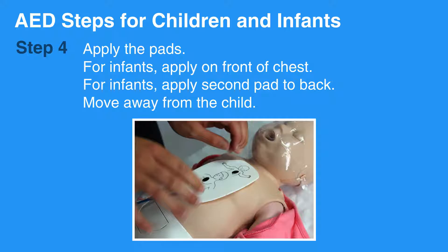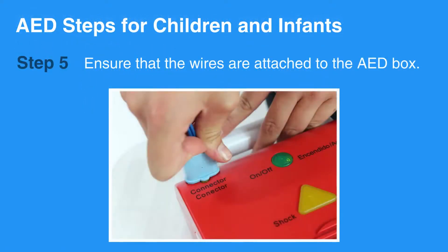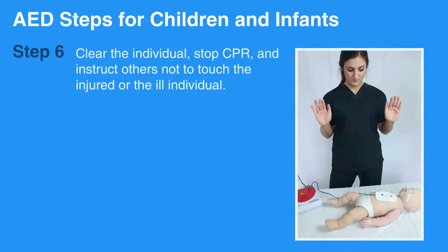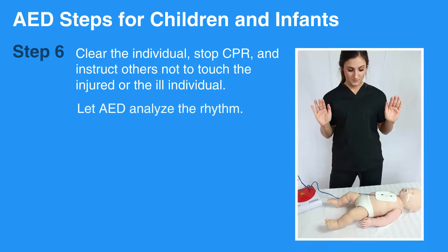Move away from the child. Ensure that the wires are attached to the AED box. Then, clear the individual, stop CPR, and instruct others not to touch the injured or ill individual. Let the AED analyze the rhythm.